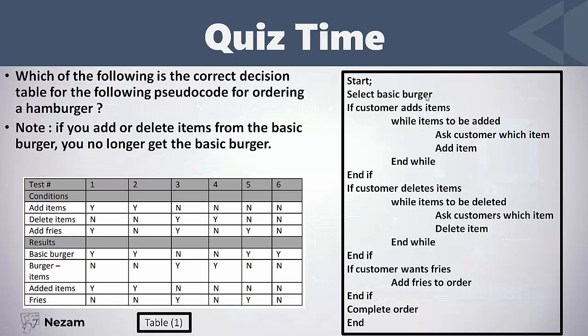The code says we start and select the basic burger. If the customer adds any item, we ask which items to add and we add them. If he wants to delete an item, we ask what to delete and we delete it. If the customer wants fries with the order, we add fries and complete his order. We have three conditions — each with yes or no — giving us two to the power of three test cases, which is eight test cases.